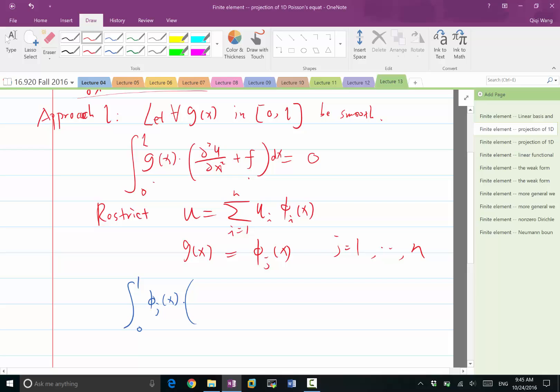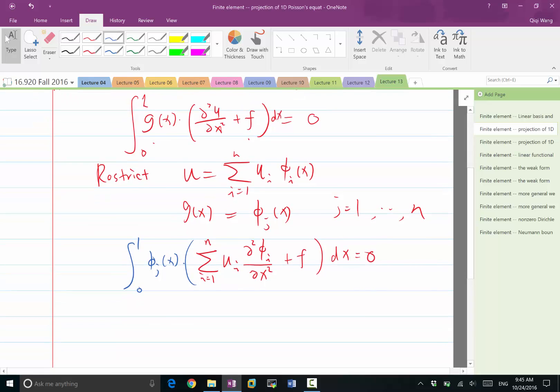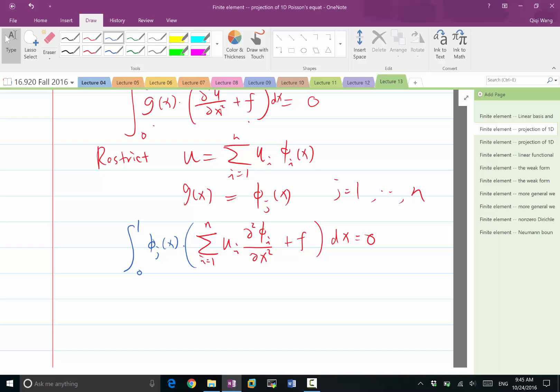Here, the ui's are not functions of space, and phi i's are functions of space. So we integrate u i, and the second-order derivative is going to be applied to the basis functions. We are going to pull these summations out of the integral. What we get is summation of i goes from 1 to n, ui, times the integration of 0 to 1, phi j of x, times the second-order derivative of phi i dx.